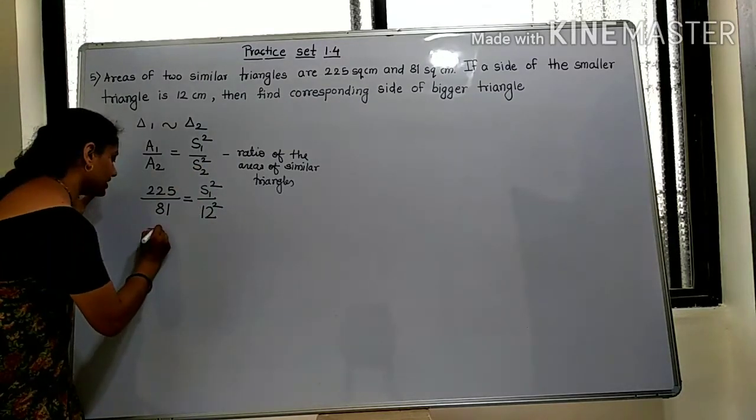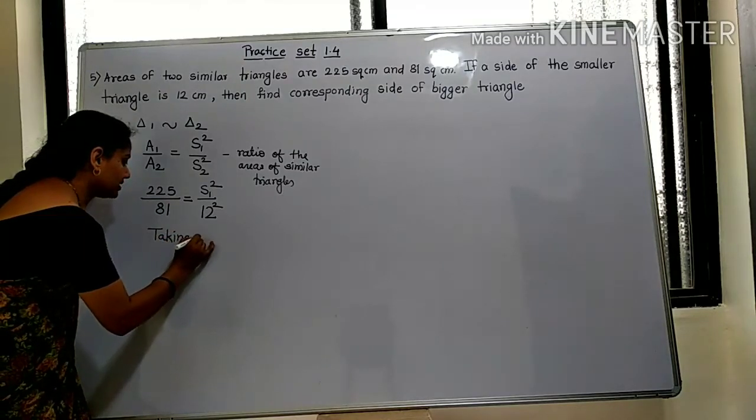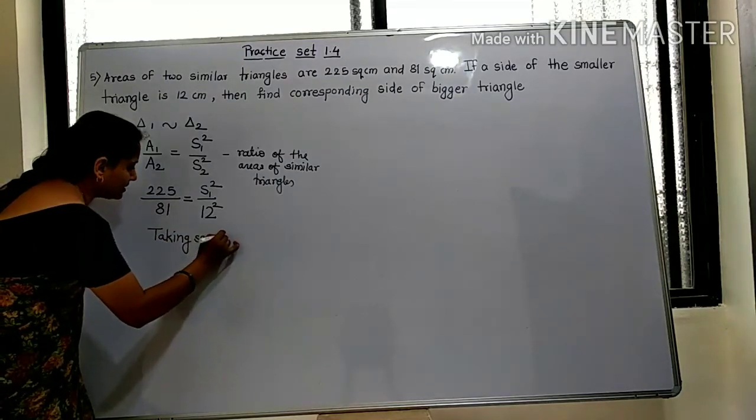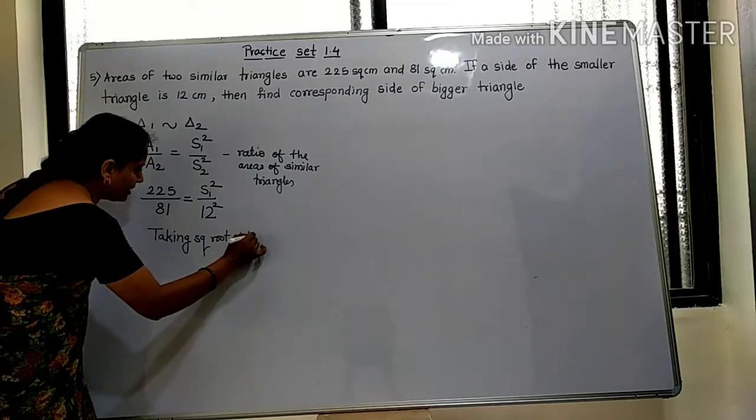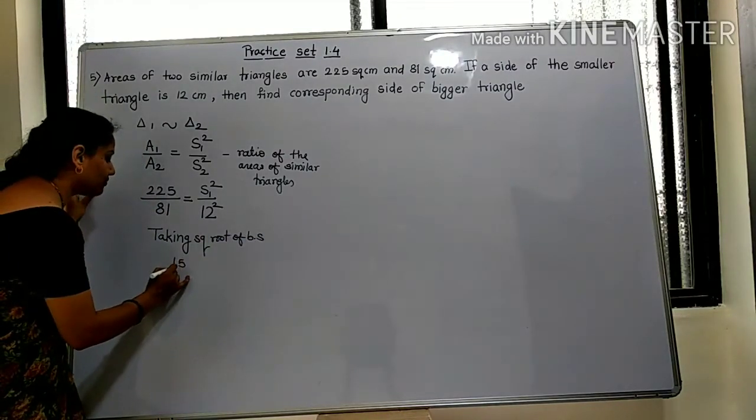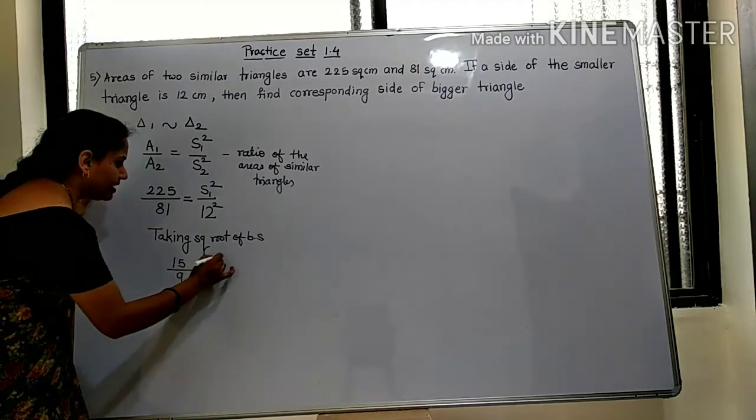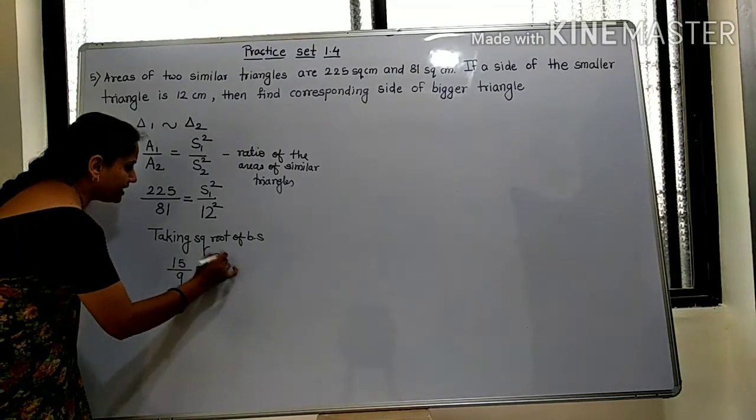So taking square roots of both sides: the square root of 225 is 15, the square root of 81 is 9, square root of S1 squared is S1, and the square root of 12 squared